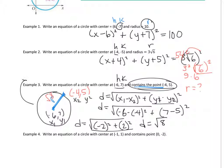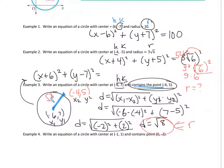So the equation becomes (x plus 6) squared plus (y minus 7) squared equals r squared. Since r is root 8, r squared is just 8. So the final answer is (x plus 6) squared plus (y minus 7) squared equals 8.